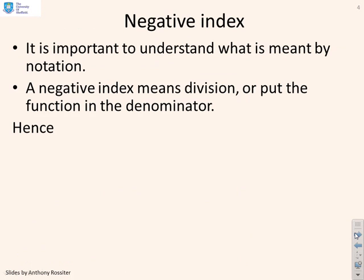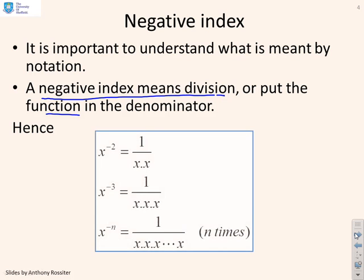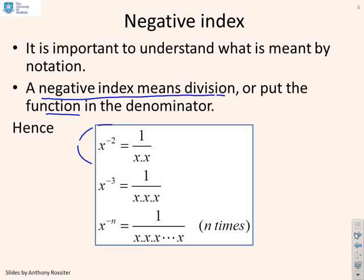What happens if I have a negative index, which is quite useful and comes up a lot? Well a negative index means division or put the function in the denominator. The two are the same really. So here's an example. x to the minus 2 means 1 over x squared. You can see two x's but in the denominator because the power is a minus. x to the minus 3, I've got three x's but it's 1 over x cubed because it's x to the minus 3. Or x to the minus n is 1 over x to the n.